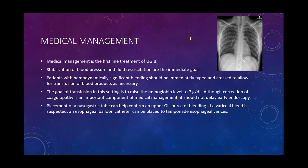Once patients are risk-stratified, first-line treatment for upper GI bleeds is medical management: stabilize blood pressure, fluid resuscitation, type and cross, and transfuse blood products as soon as possible. The goal is a hemoglobin level greater than or equal to seven. Placement of a nasogastric tube can be helpful to confirm a GI source of bleeding.